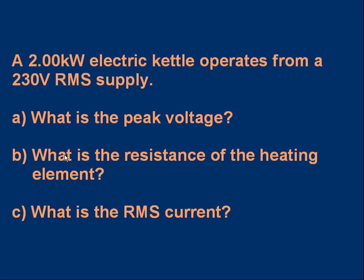Here's a question for you to try. I've got a 2.00 kilowatt electric kettle on a 230 volt RMS supply — that's what we use in the UK, and 230 volts is the RMS value, not the peak value. The questions are: what's the peak voltage, what's the resistance of the heating element, and what is the RMS current?